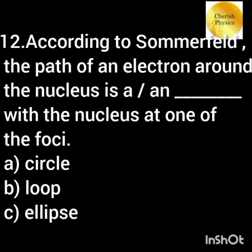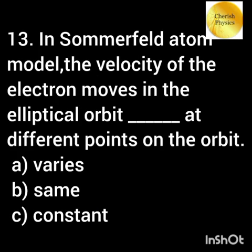According to Sommerfeld, the path of an electron around the nucleus is an ellipse with the nucleus at one of the foci. In the Sommerfeld atom model, the velocity of the electron moving in the elliptical orbit varies at different points on the orbit.